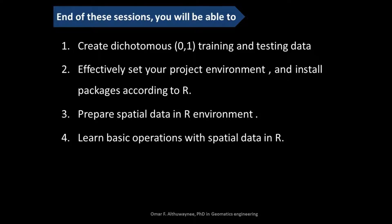By the end of this session you should be able to create dichotomous training and testing data — meaning you will learn how to classify your data into training sets with zero and one values. We will also learn how to find the zero values effectively, and how to set up your project environment in R, including installing packages and working comfortably so you have full confidence about where your input images and output reports are located.